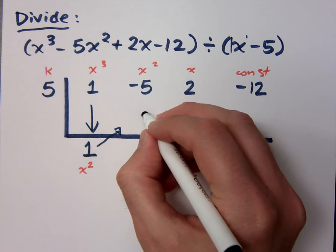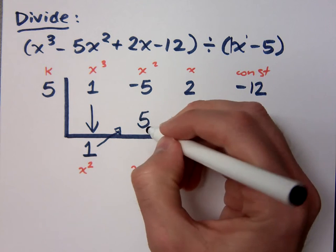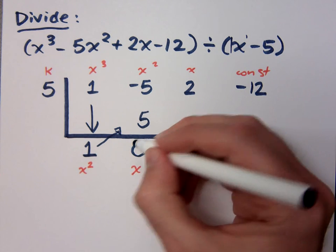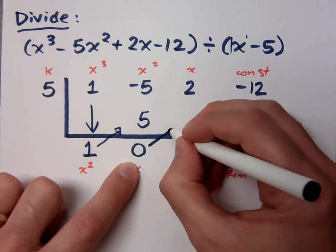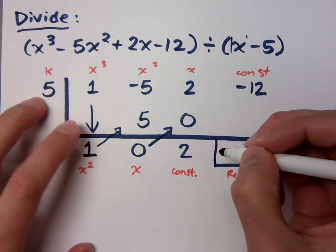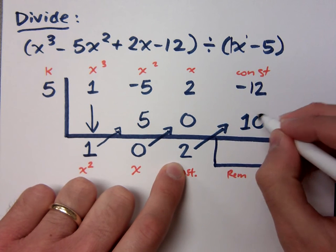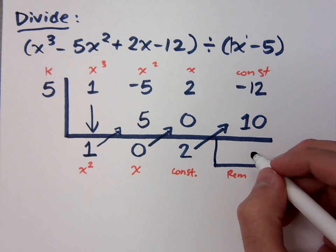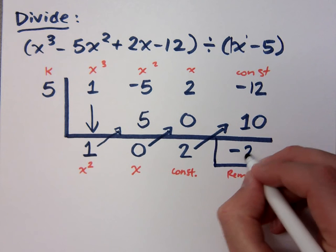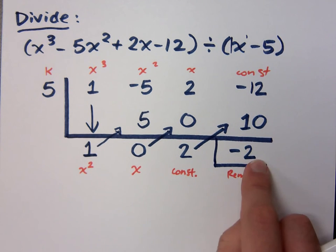Multiply and I get 5. What do I do with these numbers? Add them and I get 0. 5 times 0 is? 2 plus 0 is 2. Multiply again. I get a remainder, don't I? So these are all of your coefficients. These are all the numbers you need. Take this and write your answer.